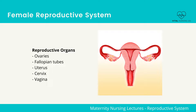The female reproductive system. The female reproductive organs include the following: 1. Ovaries, 2. Fallopian tubes, 3. Uterus, 4. Cervix, 5. Vagina.